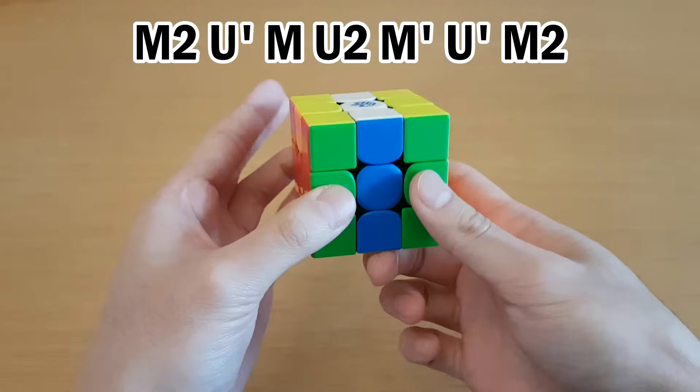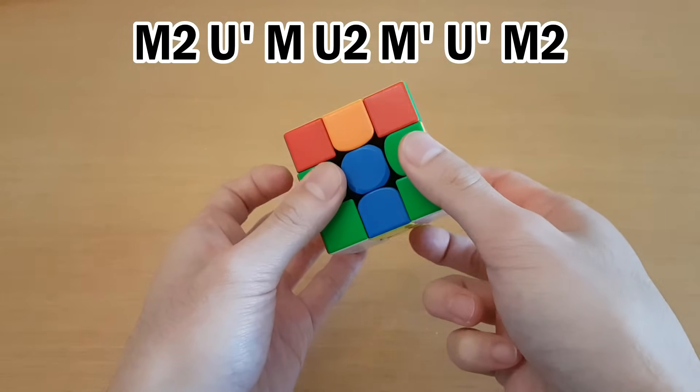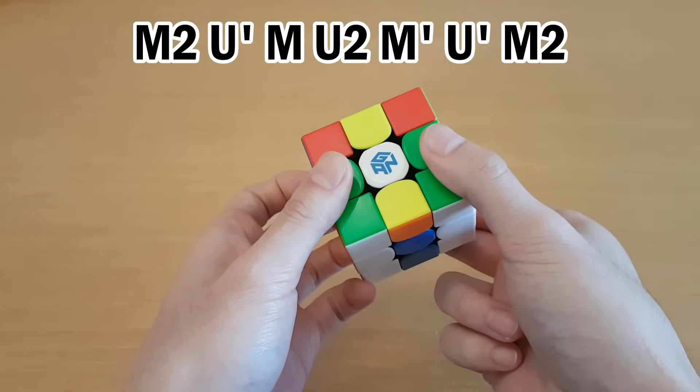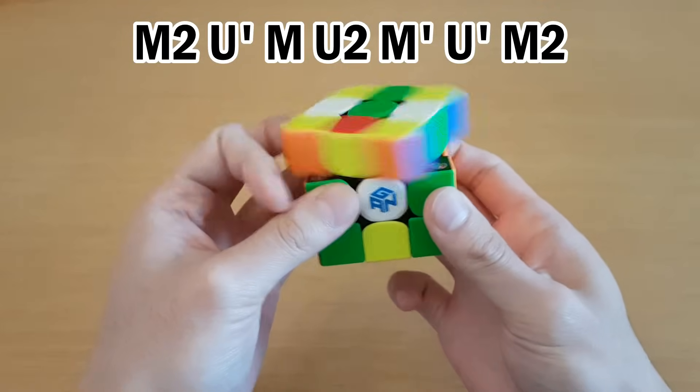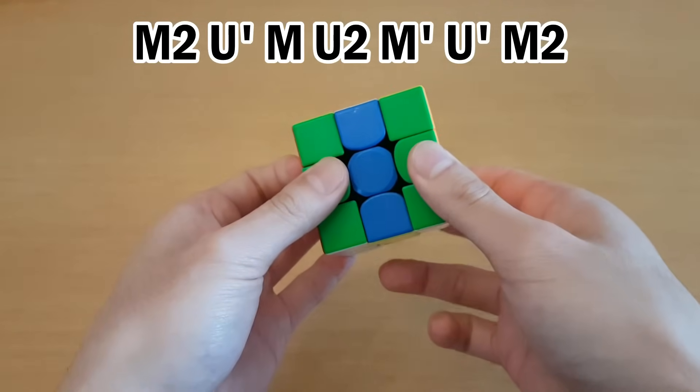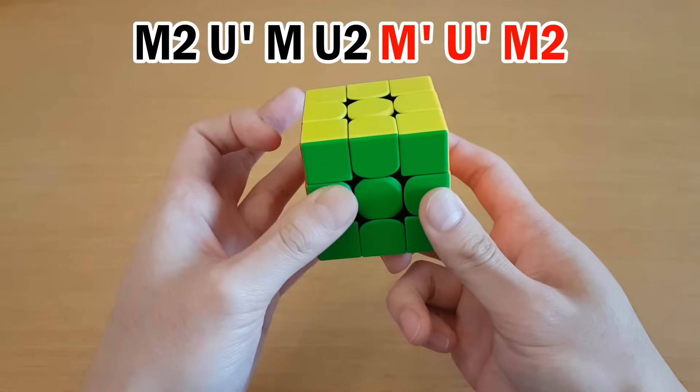You can see why something like a U-perm would be faster. Here, M2, U-prime, then my middle finger is already in the right spot to push backwards. I don't really have to reset my fingers here. And then, just continuing, there's only one finger reset here after the M-prime, and I go into M2 again.